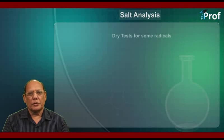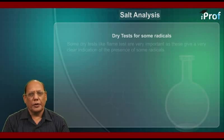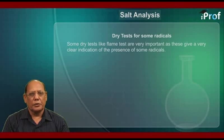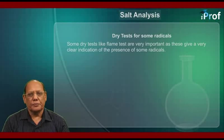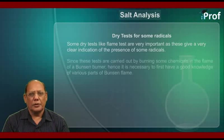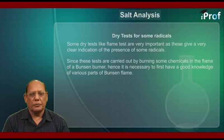Dry tests for some radicals. Some dry tests like flame tests are very important as these give a very clear indication of the presence of some radicals. Since these tests are carried out by burning some chemicals in the flame of a Bunsen burner, it is necessary to first have a good knowledge of various parts of the Bunsen flame.